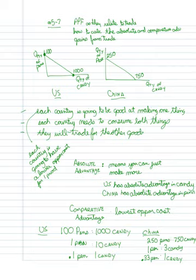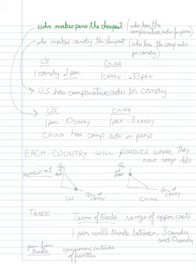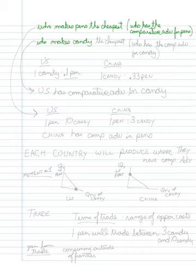We could also reduce it down the other way: how much does 1 candy cost? In the U.S., 1 candy costs 1/10 of a pen. So the question we have to ask ourselves is: who makes pens the cheapest — in other words, who has the comparative advantage for pens? And who makes candy the cheapest — who has the comparative advantage for candy?